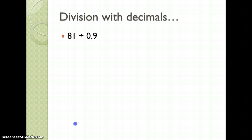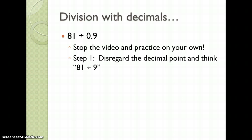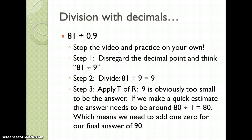81 divided by 0.9 — stop the video and practice on your own. We're going to disregard the decimal point and think 81 divided by 9. We're going to divide 81 by 9, which is 9. 9 is obviously too small to be the answer. If we make a quick estimate of around 80 divided by 1 equals 80, our answer needs to be around 80. Therefore, we need to add one 0 to our answer in step 2 for our final answer of 90.